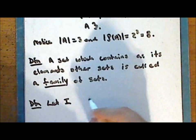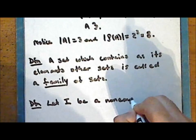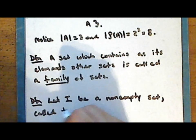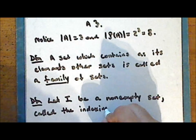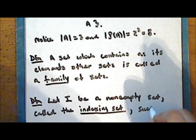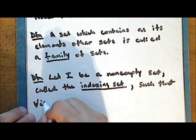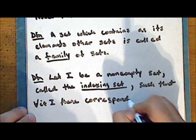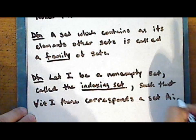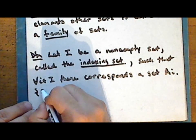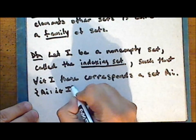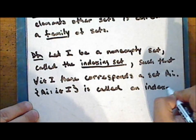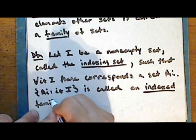Let the set I be a non-empty set which we call the indexing set, such that for every index i in that indexing set there corresponds a set A sub i. The collection of those sets A sub i, for i in the indexing set I, is called an indexed family of sets.